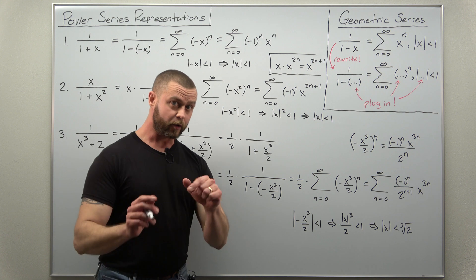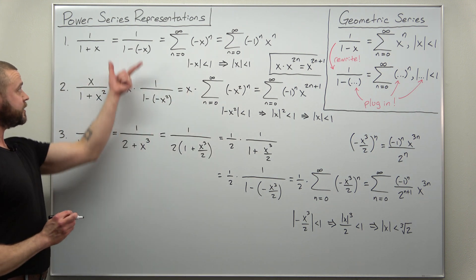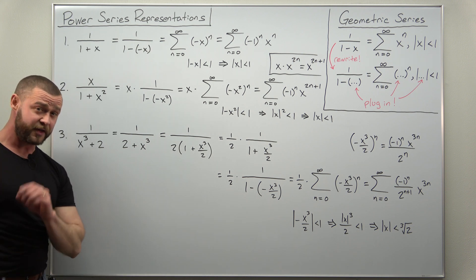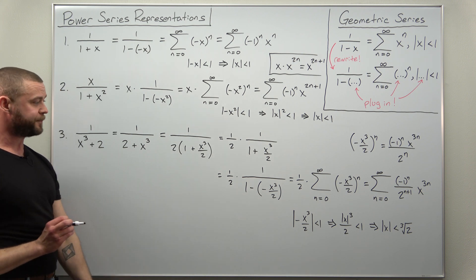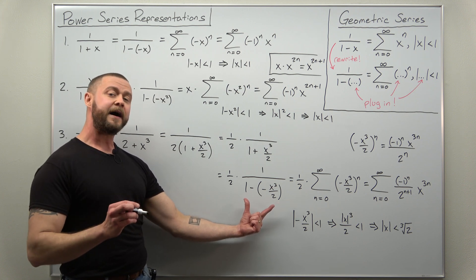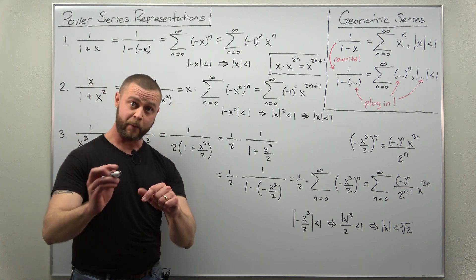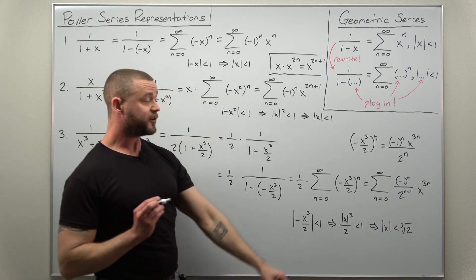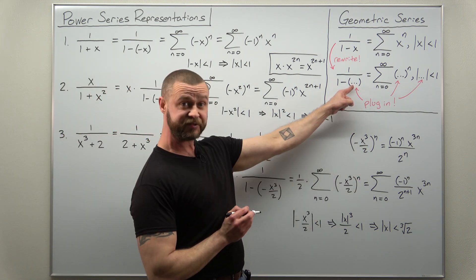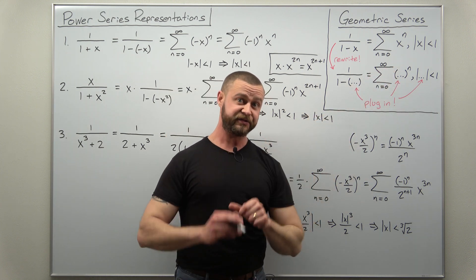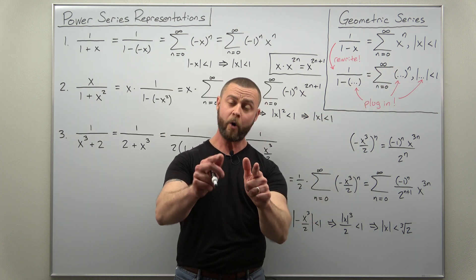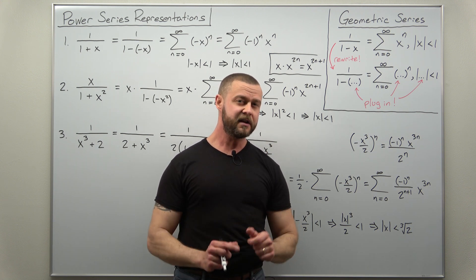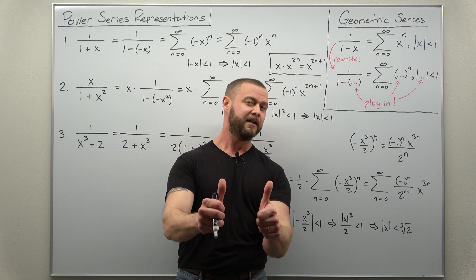All the work for all three problems involved rewriting the function — some steps simpler than others — to fit the form one divided by one minus something. Once you have that, it's just a matter of plugging your expression into the summation. Hope you enjoyed this short video on how to find power series representations — if you did, please like and subscribe.